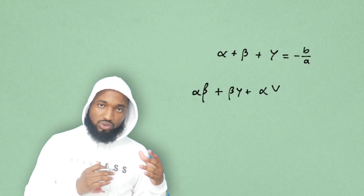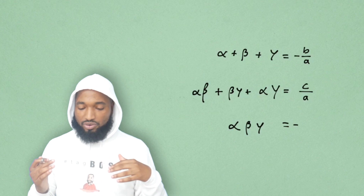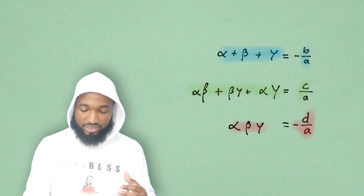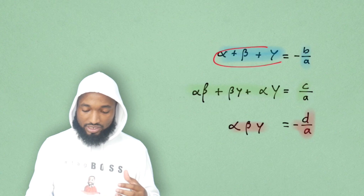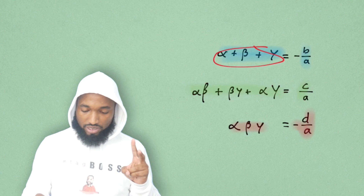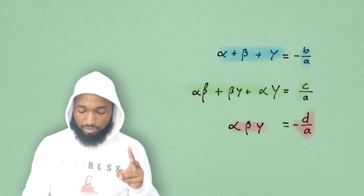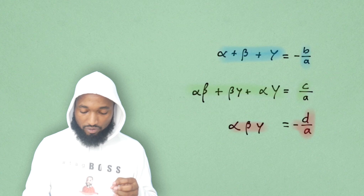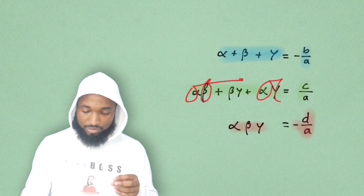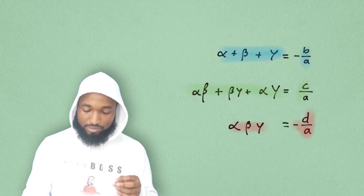So from those two things, when you compare the coefficients, you get the sum. This is your sum. This is the sum of the products, multiplying two at a time — everybody gets a touch of everybody. Alpha gets beta, alpha gets gamma, beta gets gamma.